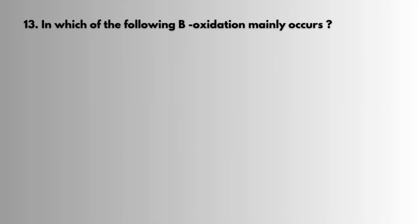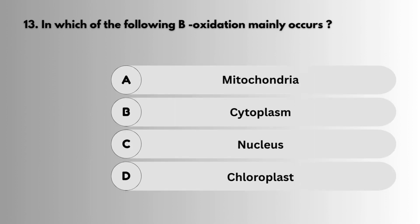Question 13: In which of the following does beta-oxidation mainly occur? Answer: Mitochondria.